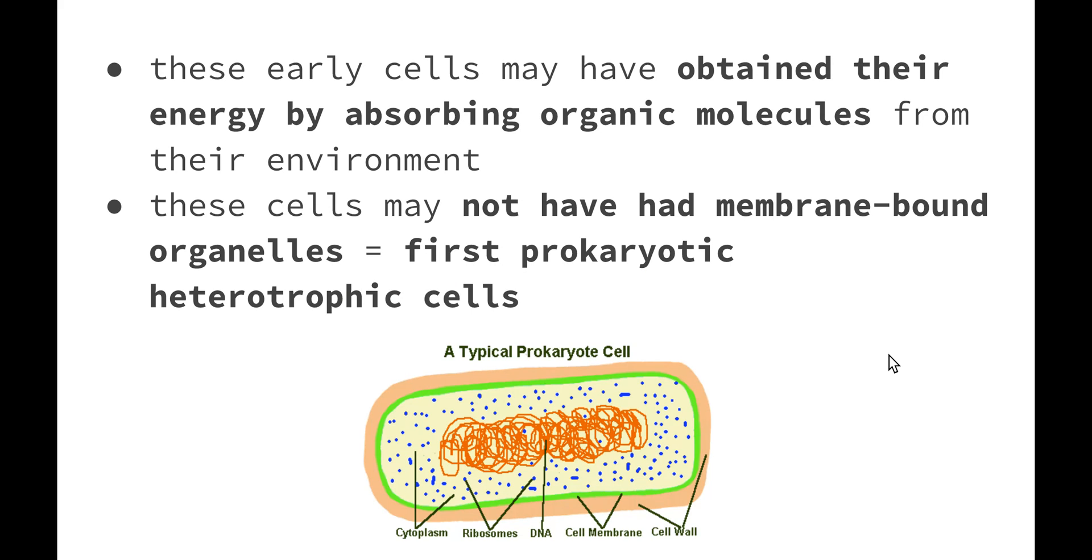These early cells may have obtained their energy by absorbing organic molecules from their environment. So they were taking energy in, they weren't producing their own energy. These cells may not have had any membrane-bound organelles, so they were our first prokaryotic heterotrophic cells. A prokaryotic cell doesn't have any membrane-bound organelles, so it doesn't have a nucleus, doesn't have mitochondria. And as we know, heterotrophic means that it needs to absorb energy from somewhere else. These simple organisms were around before organisms were able to create their own food.